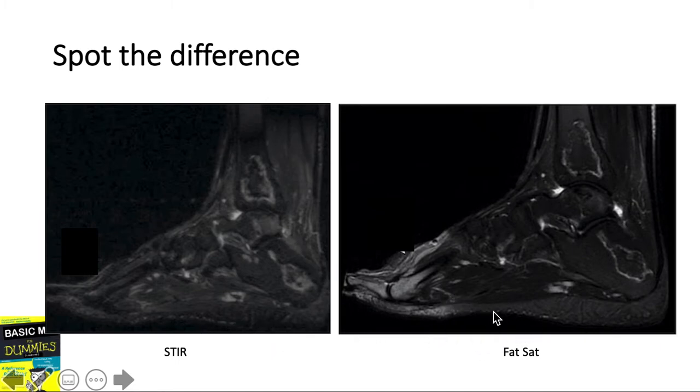Which of this would provide better or uniform fat suppression? Here we see that fat sat has areas of incomplete fat suppression compared to the STIR images. This is because fat saturation is prone to non-uniform magnetic field, in this case because of the air-bone interface. However, despite this disadvantage, fat sat also has